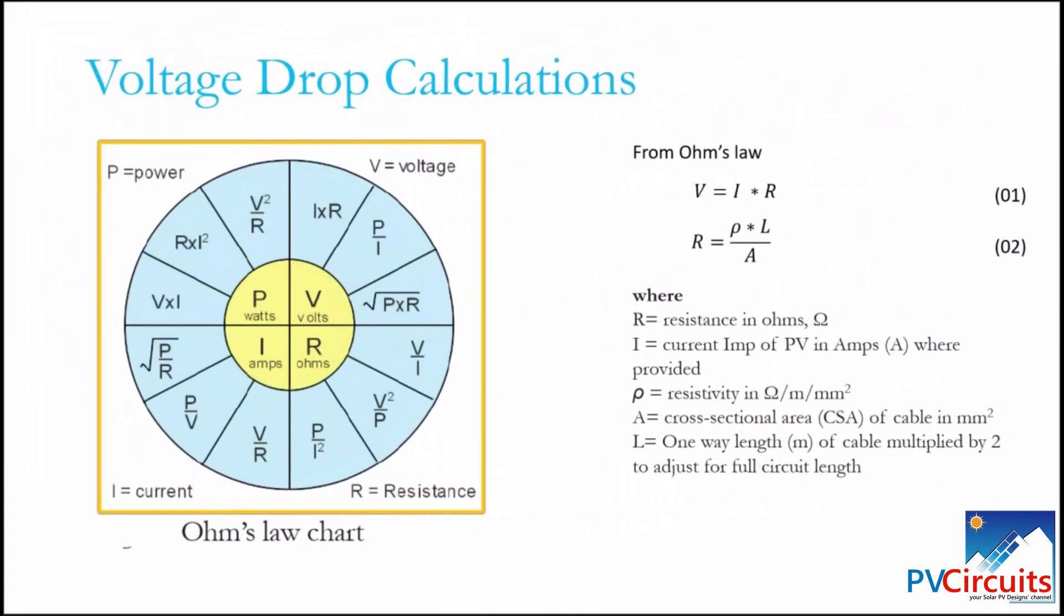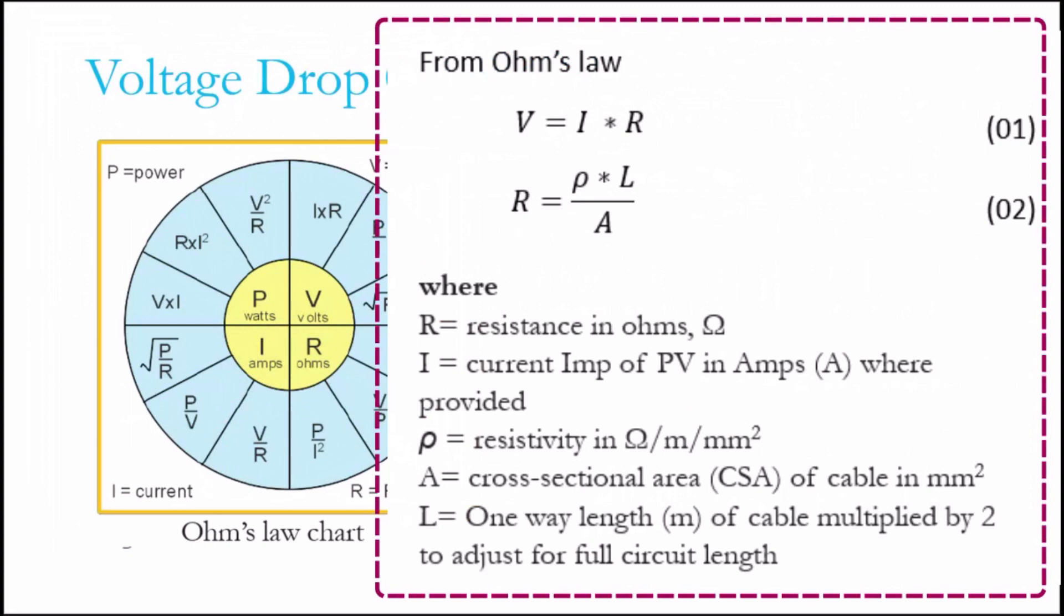Now let's look at the mathematics that govern voltage drop calculations. We start with looking at the Ohm's law chart which gives us a relationship between power, voltage, resistance and current. From equation 01, governed by Ohm's law, we find that voltage is expressed as being equal to current times resistance and resistance is expressed as being equal to resistivity times the length divided by the area.